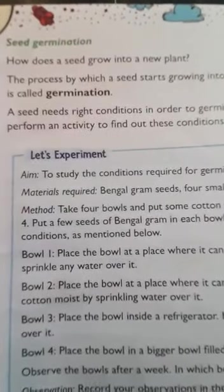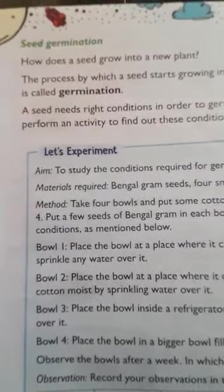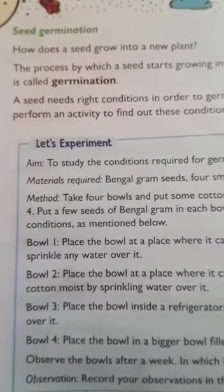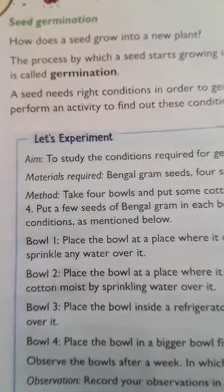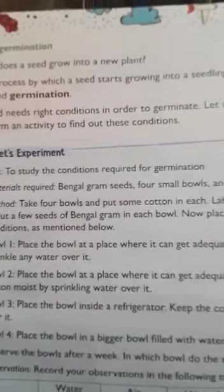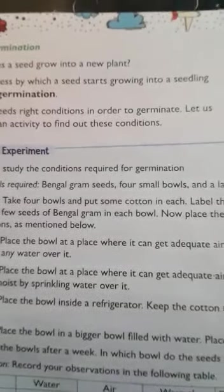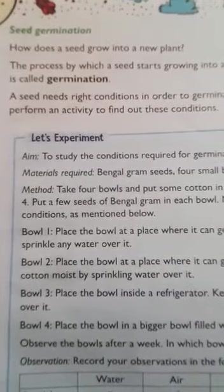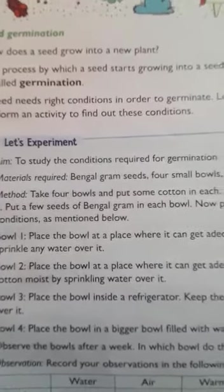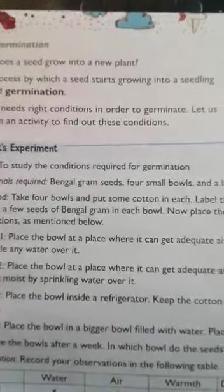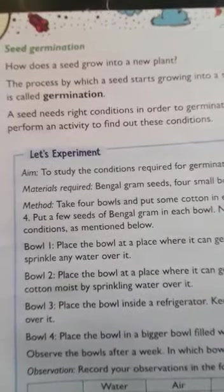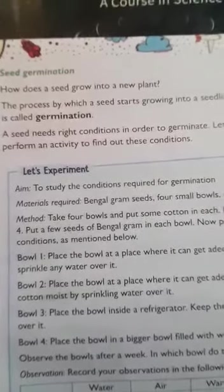Now we will see seed germination. How does a seed grow into a new plant? We have just seen the parts of a seed. The process by which a seed starts growing into a seedling is called germination. A seed needs the right conditions in order to germinate and grow into a new plant.